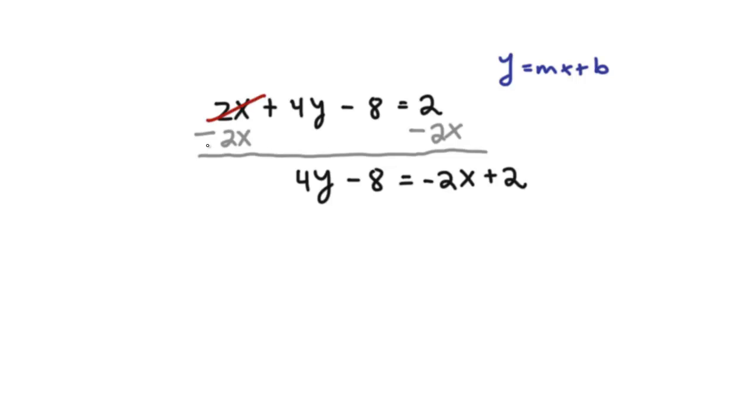And we know that this 2x and negative 2x, they went away. So now, the only thing we have to do is get rid of this negative 8. So let's add 8 to both sides. So I'm just going to put it over here.